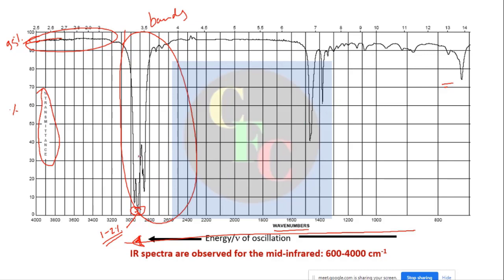There are three types of bands: strong (S), medium, and weak. Strong bands are where transmittance is less than 5 to 10% — so more than 90-95% is absorbed. Where transmittance is 50 to 60%, they are medium, and around 70% or more, they are considered weak.